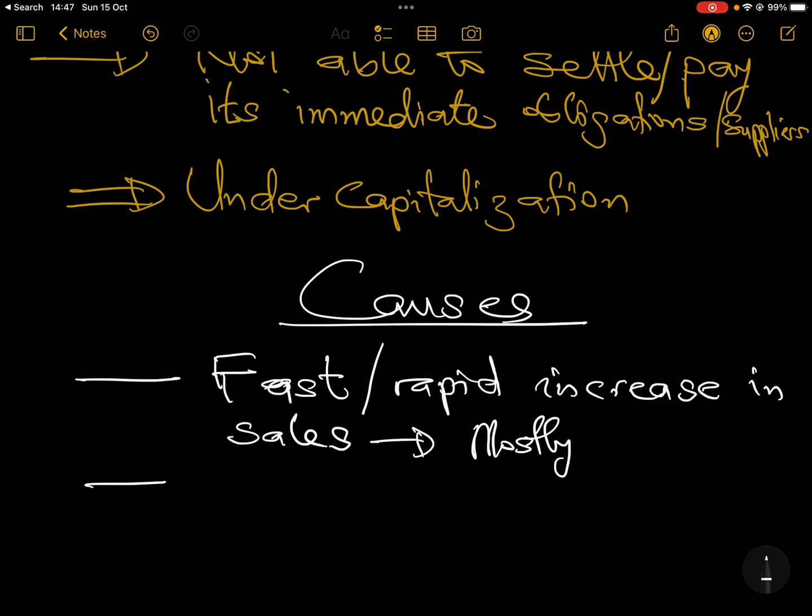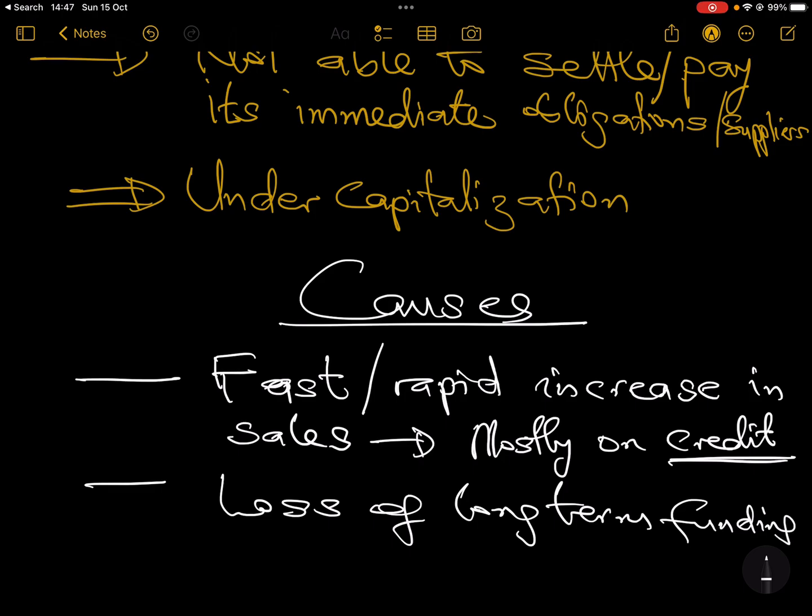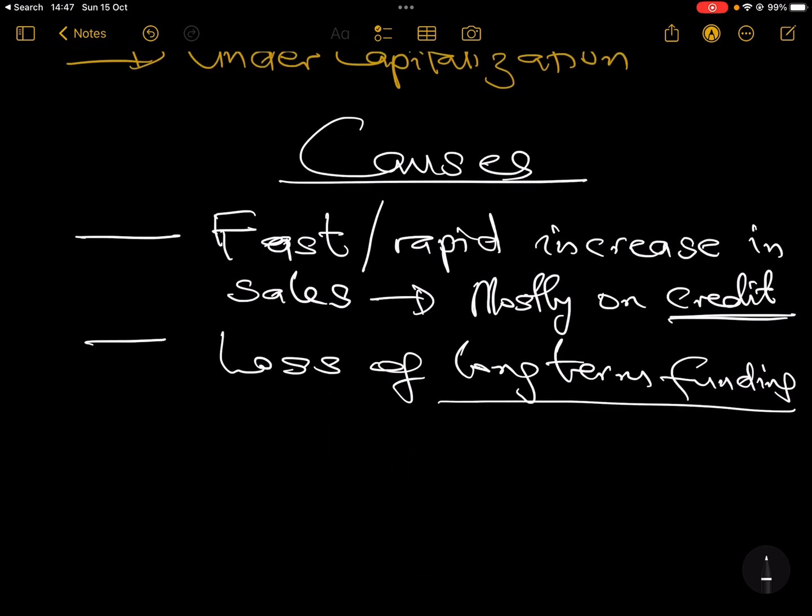But to the extent that some of these customers don't even have enough money, but they just feel like okay there's a sale going on. Most times what happens is these companies are selling on credit, because once customers know that you can buy without paying now, they buy, they want to collect. They just want to collect the goods because there's no pressure to pay. And that is where the problem comes from, because mostly it's on credit and then the cash is not coming for the sales.